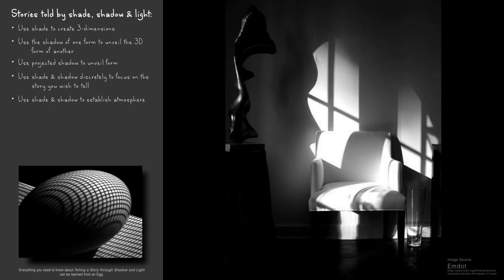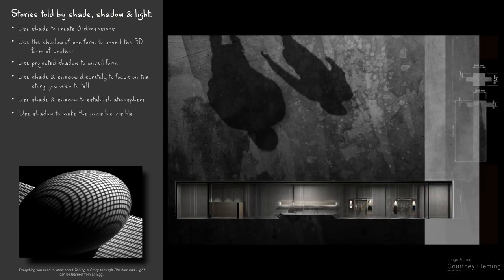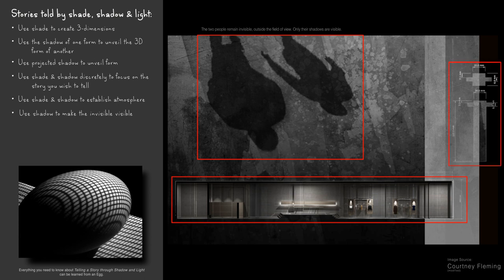One of the most interesting ways to tell a story with shadow is to include the shadow of something that is outside the field of view. In this way, shadow can make the invisible visible. In this composition, by making the invisible visible, the student shows that she is using both plan and section view, as well as three different scales in the same image.